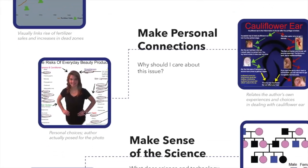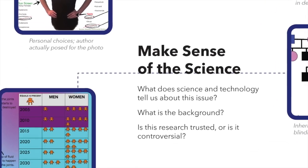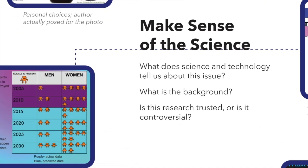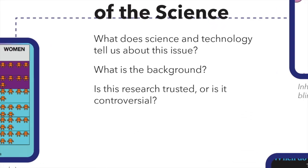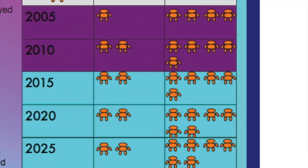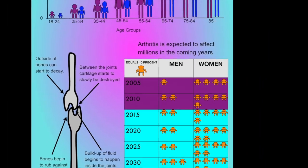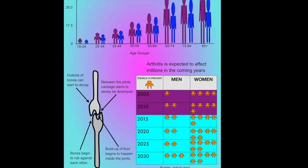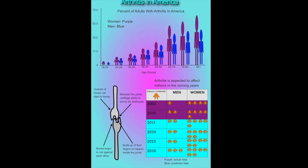Student infographic designers need to make sense of the science, answering questions like, what does science and technology tell us about this issue? This student author used current data shown in purple and future estimates shown in blue to visualize trends in arthritis rates.